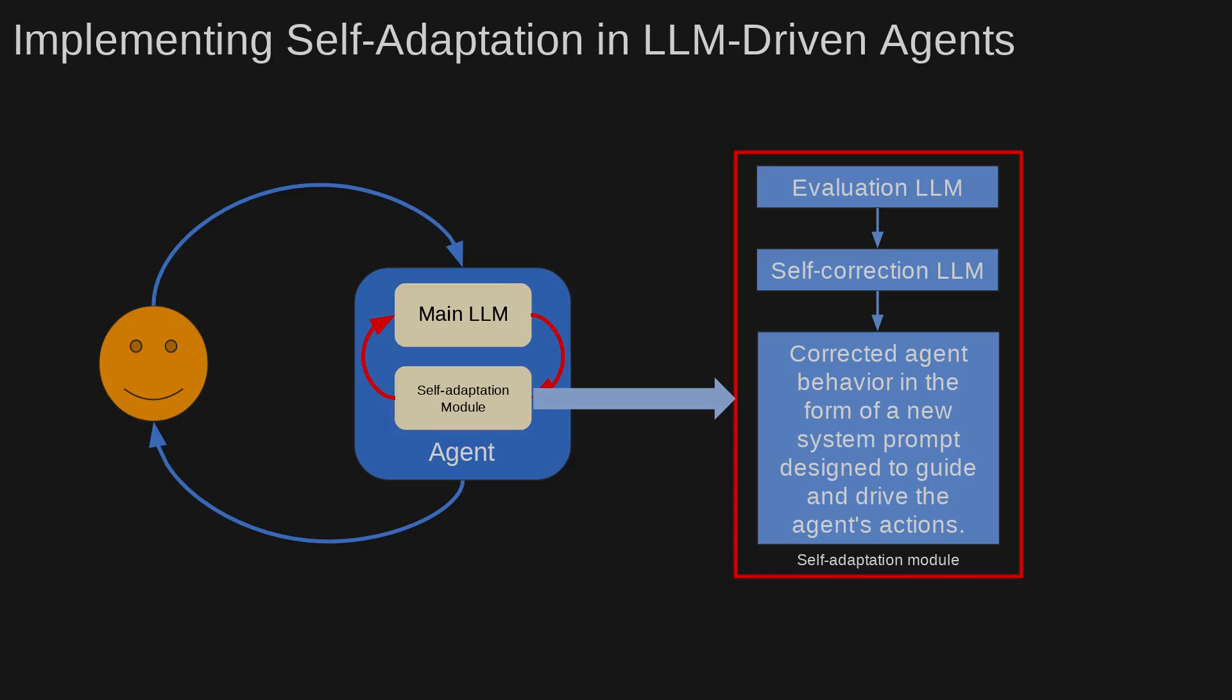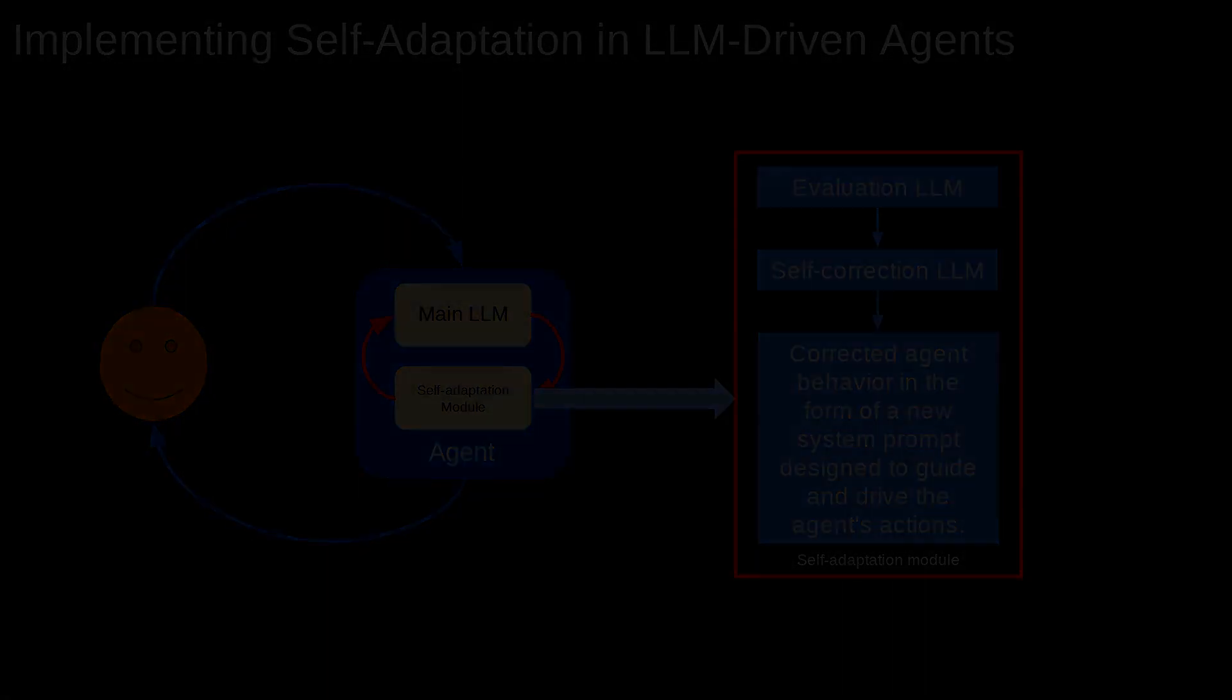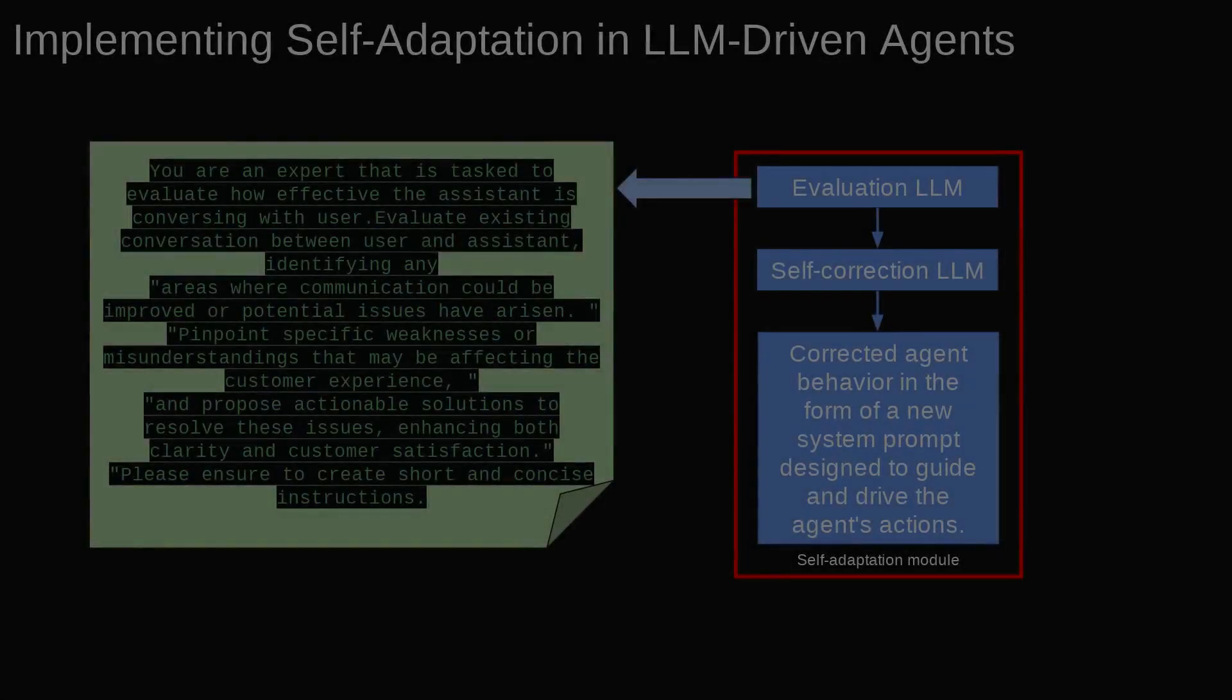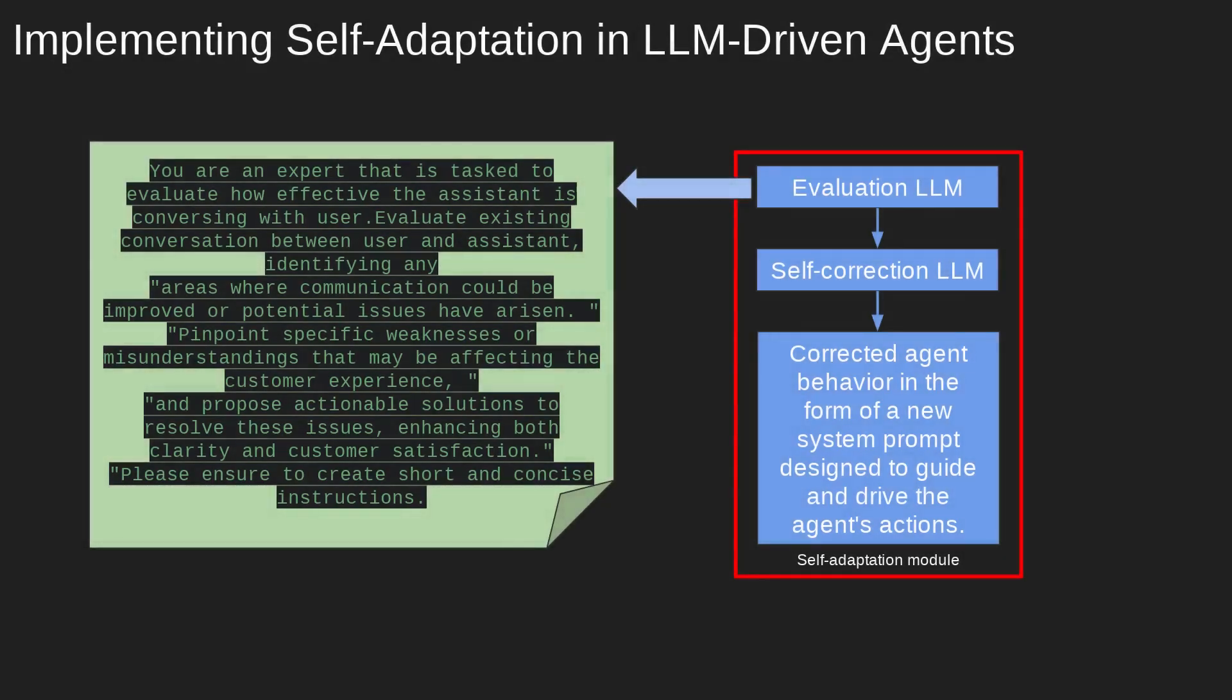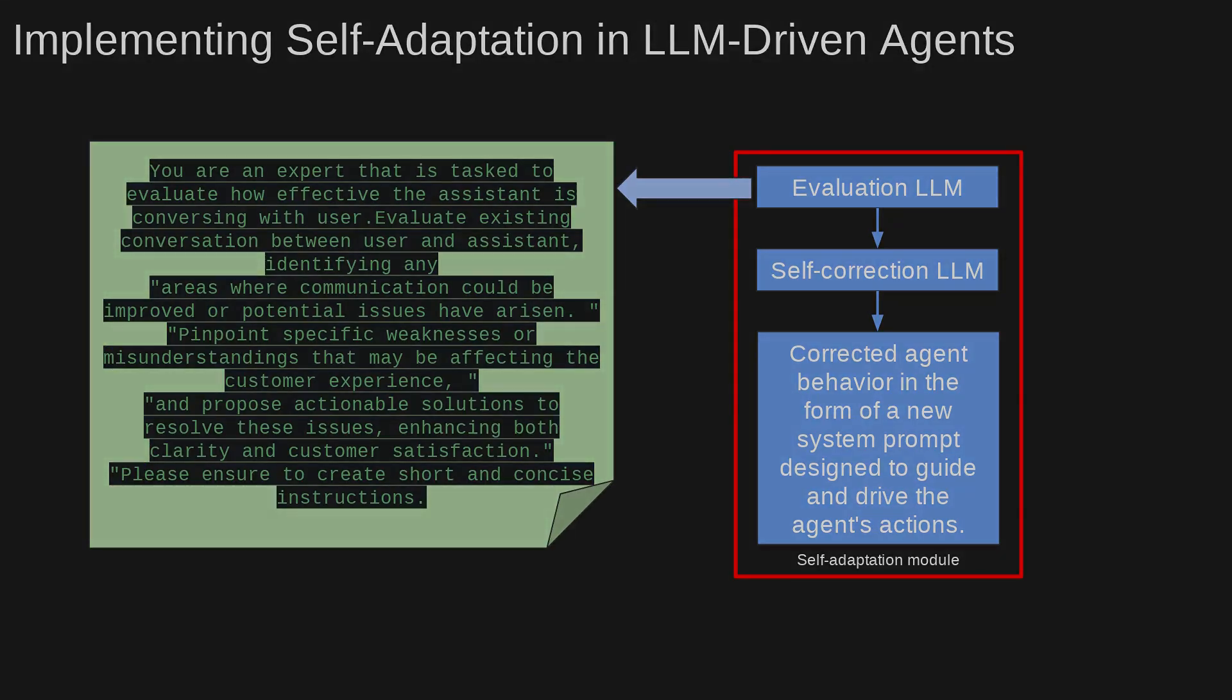The evaluation component assesses the agent's interaction with the customer using the following prompts. This evaluation LLM acts as an expert with three main goals: to evaluate the agent's efficiency during conversations, identify areas for improvement and propose actionable solutions. The second component, the self-correction module, generates instructions to enhance the original prompt with self-corrections.